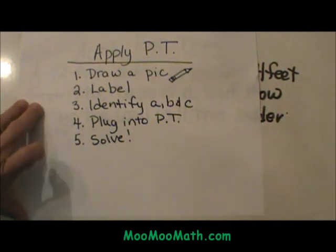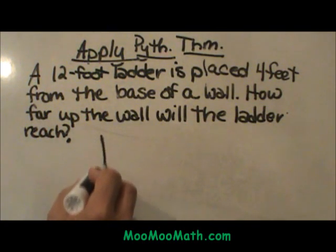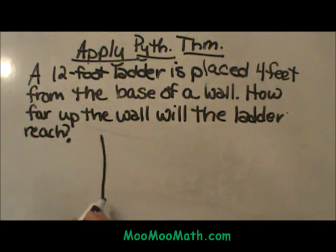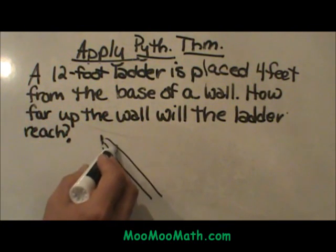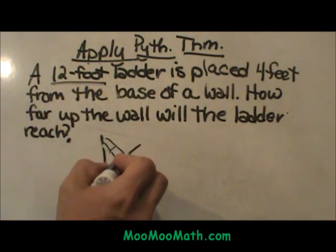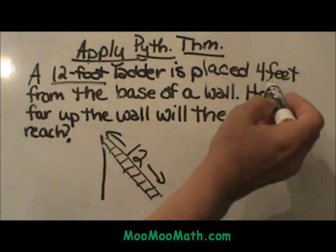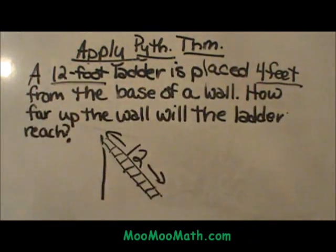Let's go through the steps. First step, let's draw ourselves a picture. We have a wall — here is our wall. We have a ladder leaning against the wall — here is my ladder. Now let's label what we know. We know this is a 12-foot ladder, so 12 is the length of the ladder. It says it is placed 4 feet from the base of the wall, so here is my 4 feet.